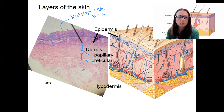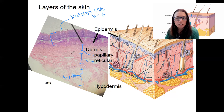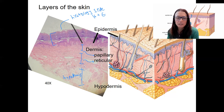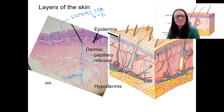You'll zoom in on that in lab. And then here is the hypodermis. This view is only 40x, so if you go in further, we can look at these layers in more detail — the papillary versus reticular layer, and also see sweat glands in there. We will do that in lab. So in the next video, I will dive in, zoom into the epidermis, and talk more about those layers.